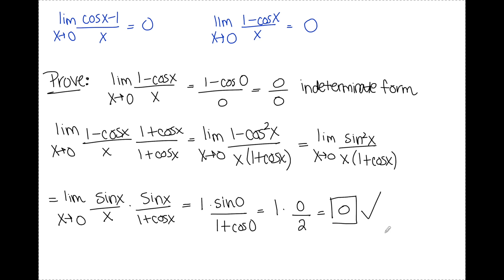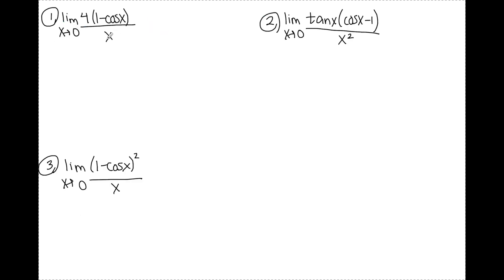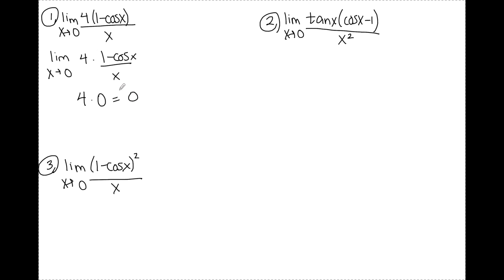Let's do a couple of examples using these two formulas. For the first one, I split it up so it looks like one of the formulas we just talked about: 4 times 1 minus cosine x over x. The 4 stays, and the limit as x approaches 0 of 1 minus cosine x over x equals 0. So 0 times 4 is 0.